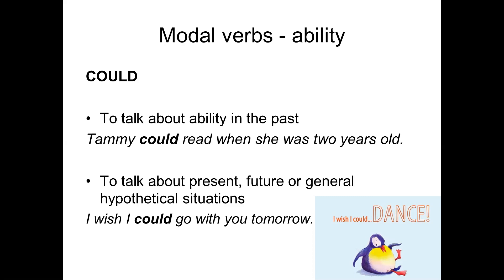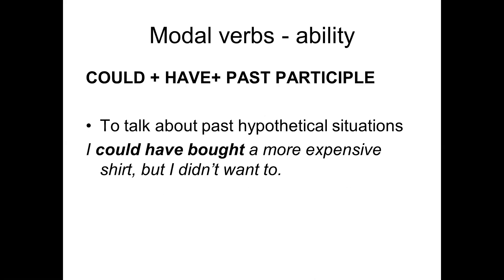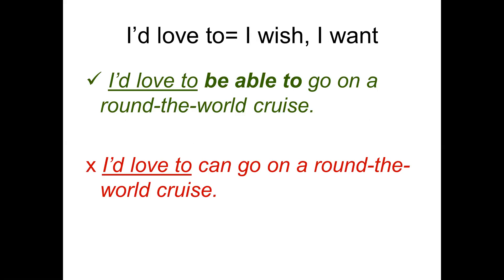For past hypothetical ability or regret, we use 'could have' plus the past participle of the verb. For example: 'I could have bought a more expensive shirt but I didn't want to' — meaning I had the ability in the past but didn't act on it. Similarly, 'I could have hurt him but I didn't' means I had the ability to hurt someone but chose not to.